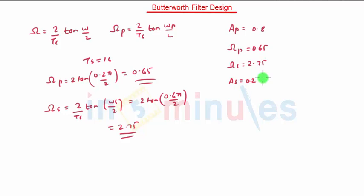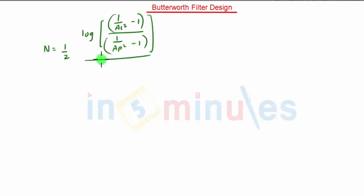Now you can find out the order of the filter. The order of the filter is given as N is equal to half of log of 1 by AS square minus 1 the whole divided by 1 by AP square minus 1 the whole divided again by log of omega S upon omega P.